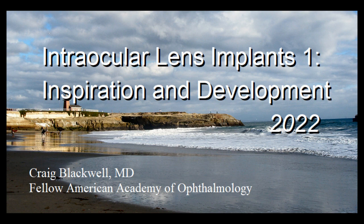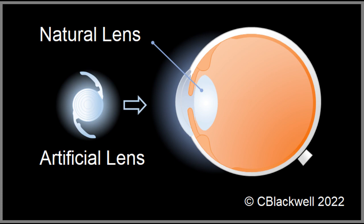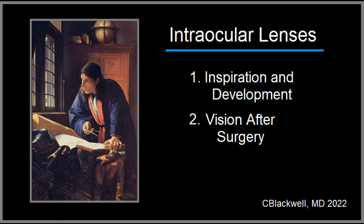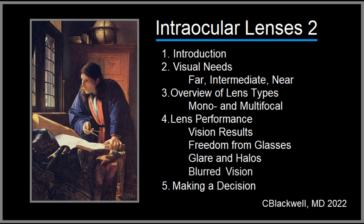This is the first of two videos about intraocular lens implants. Intraocular lenses are used to replace the natural lens after it is removed in cataract or lens replacement surgery. In this video, we explore what inspired their design and highlights of various stages in their development. In the second video, we cover design features and visual performance of current lens implants and how they affect which lens someone having surgery might choose.